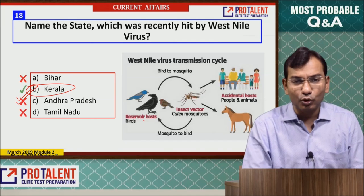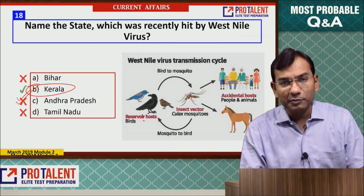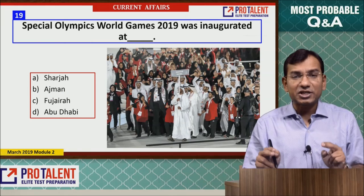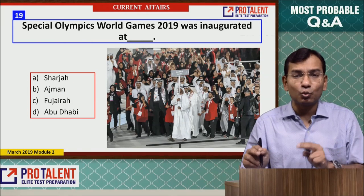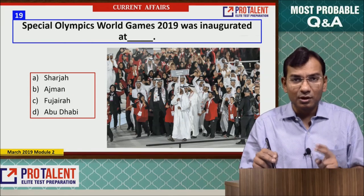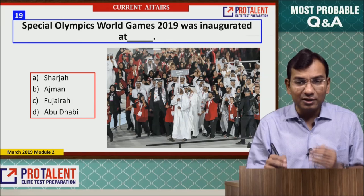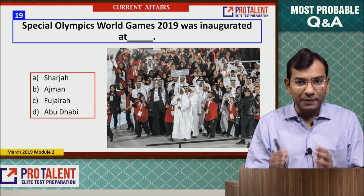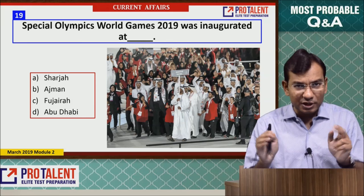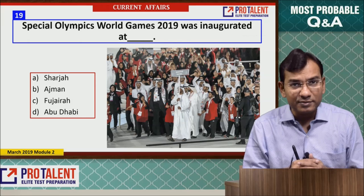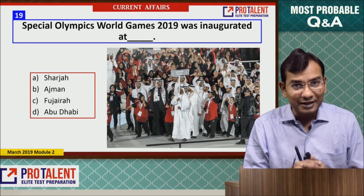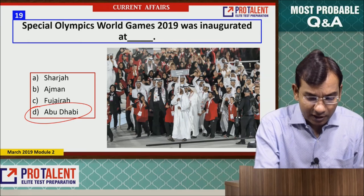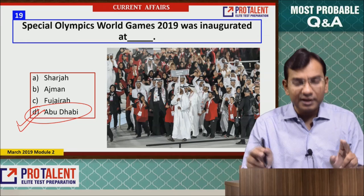Question 18 relates to vector-borne disease transmitted by mosquitoes, and we are talking about Kerala — which is facing a big problem in this regard. Question 19: The Special Olympics World Games 2019 were inaugurated at Abu Dhabi.